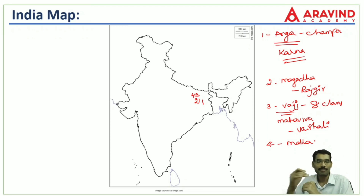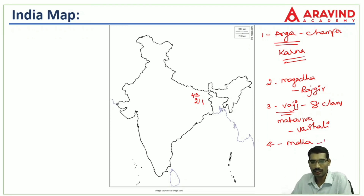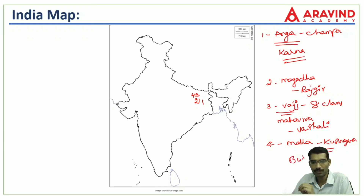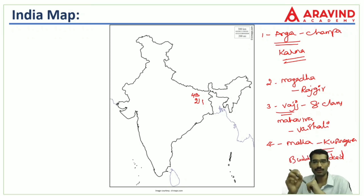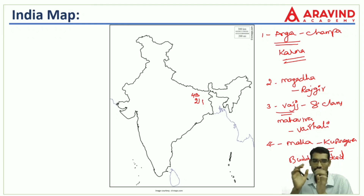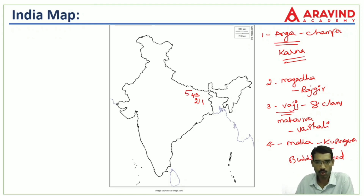The fourth Mahajanapada is Malla, a neighboring state. The capital city of Malla is Kushinagara. Kushinagara is important because Buddha died in this place. Because of Buddha's death here, the Malla Mahajanapada and its capital Kushinagara hold great historical significance.